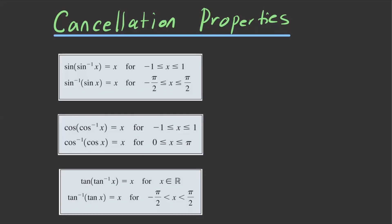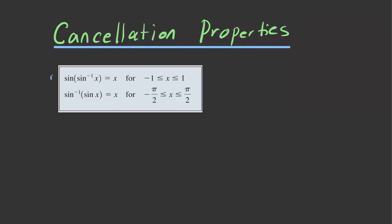Let's talk about sine first. For the first property, if you compose sine with its inverse, the result is simply x — the input — as long as x is within the restricted domain of sine inverse, which is negative one to one. Since sine is not a one-to-one function, we restrict its domain so the inverse exists. That's what we call the cancellation property.